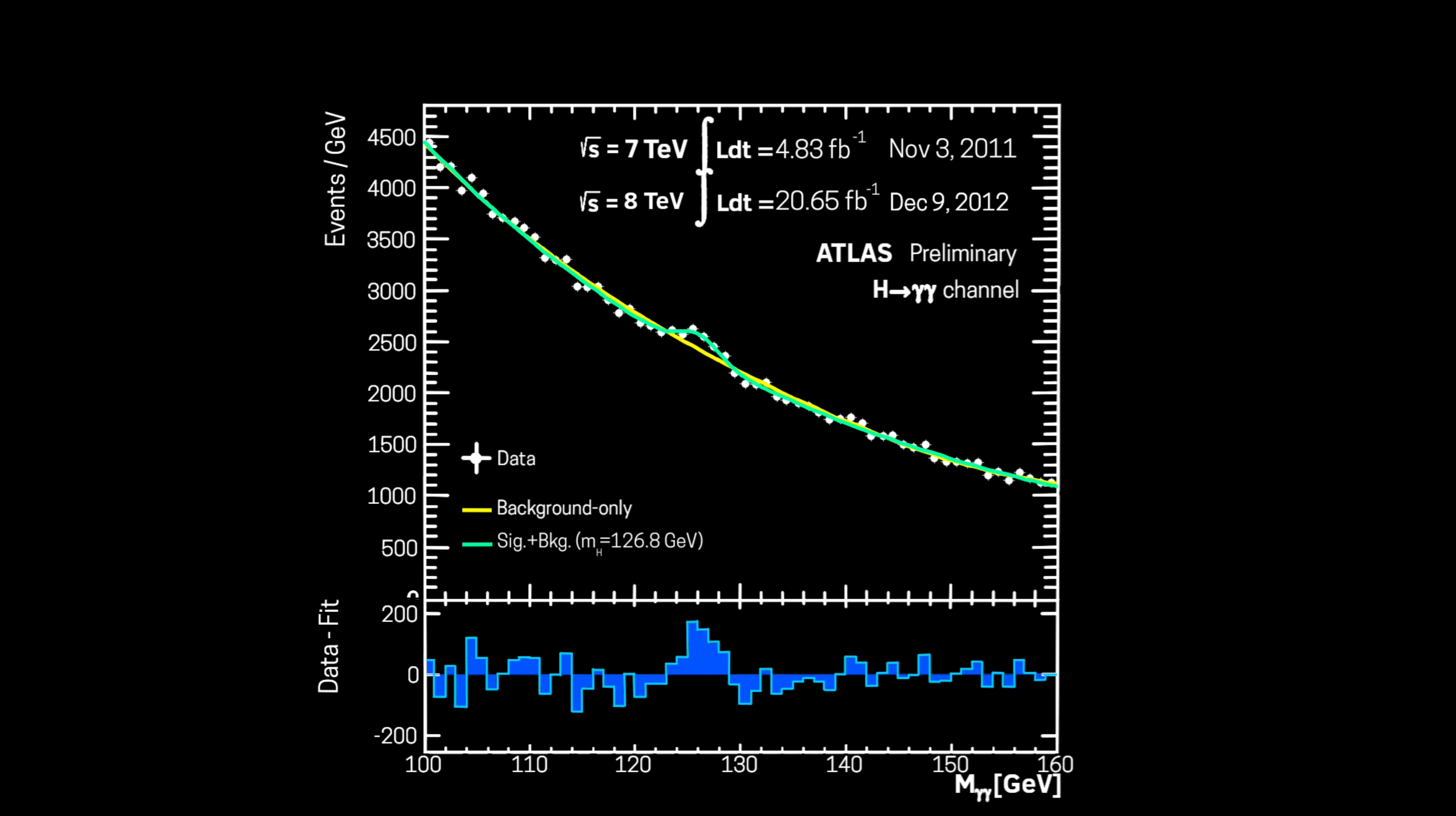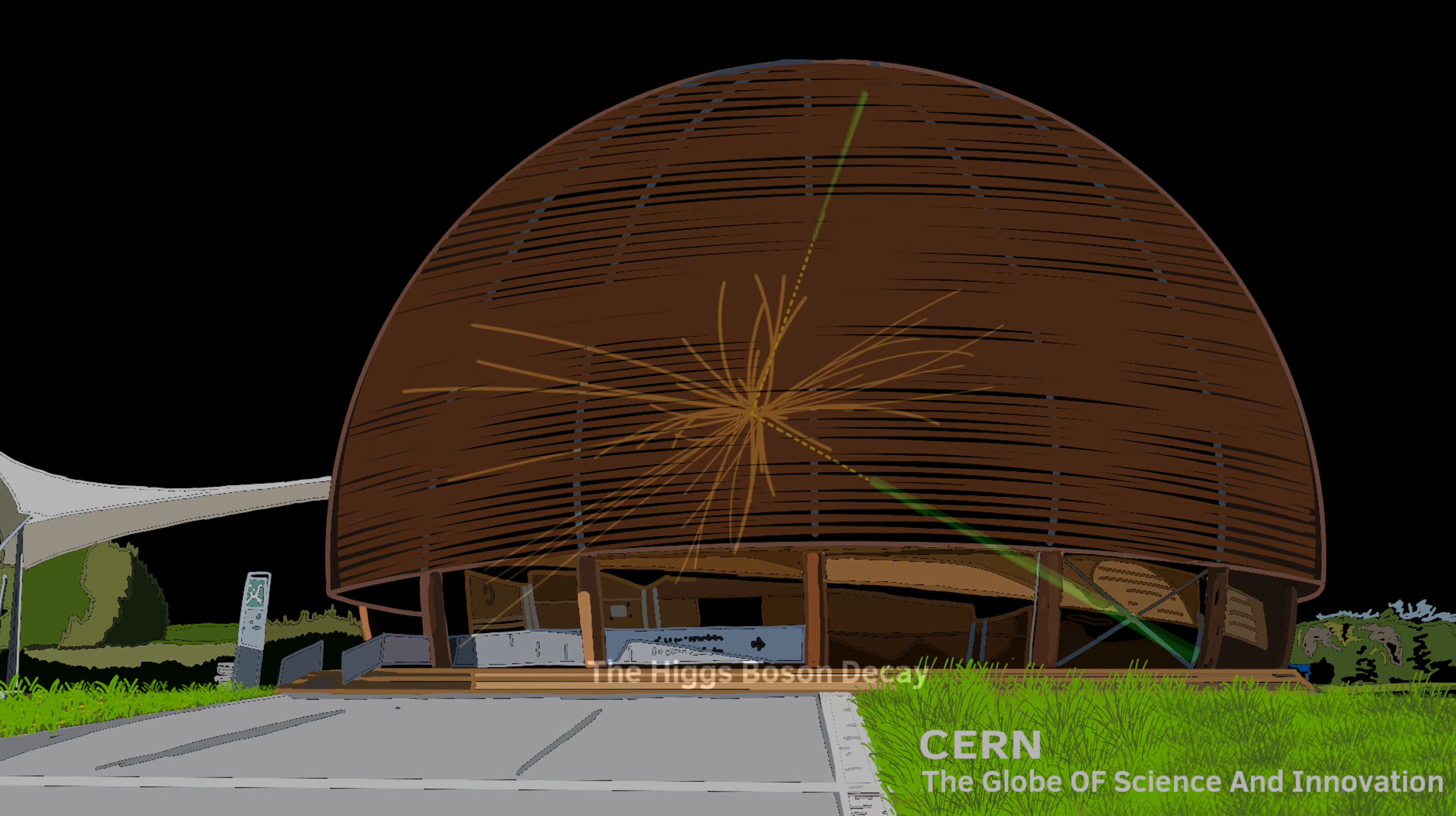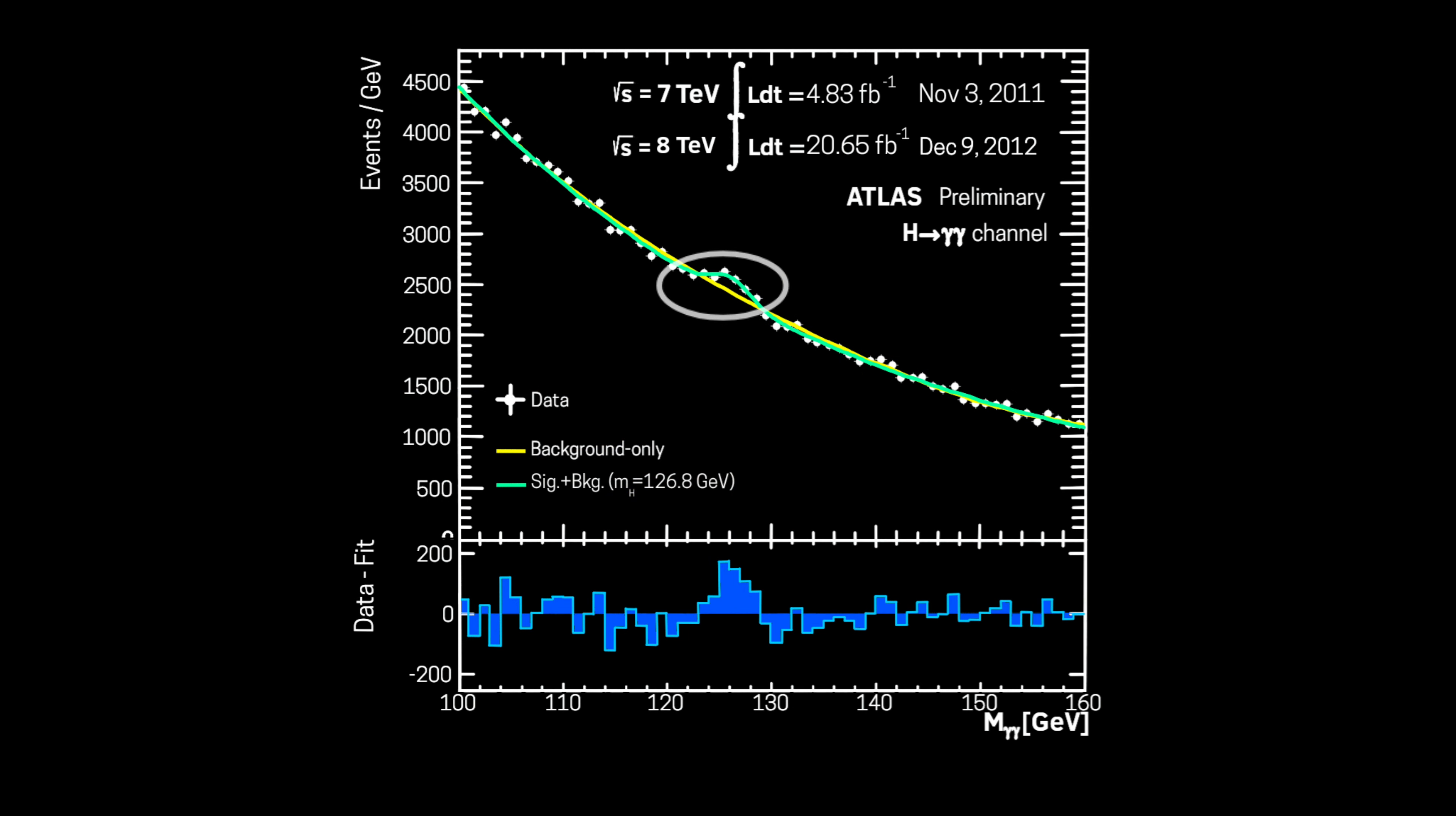After studying its properties on 4th July 2012, CERN had announced that they had observed a new particle in the mass region around 125 GeV, which is consistent with the Higgs boson.